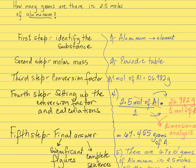The first step is to identify the substance, because you can have an element or a compound depending on your equation. In this specific case, you're talking about an element: aluminum. The second step is to find the molar mass. Since you have an element, it's super simple — the only thing you need is the periodic table. You find the atomic mass and express it in grams. The third step is to write the conversion factors.